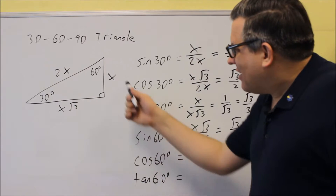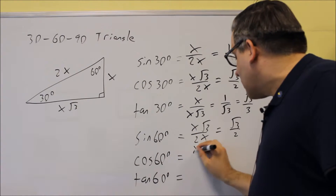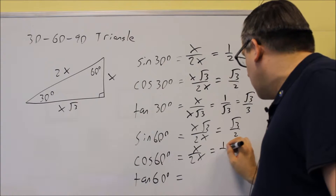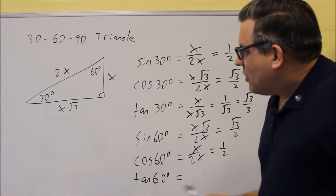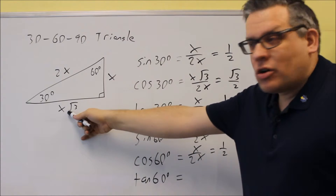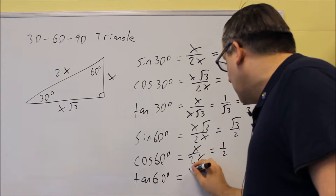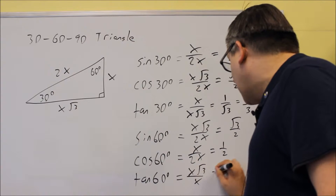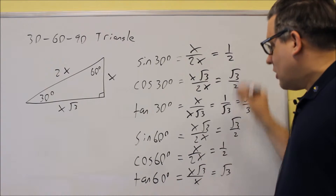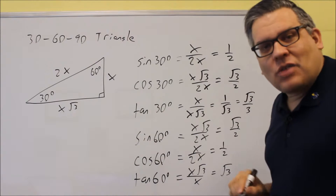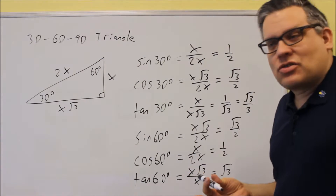For cosine 60, adjacent over hypotenuse is x over 2x, and you get 1 half. For tangent 60, the opposite is x√3 divided by the adjacent x, so you get x√3 over x, which gives you √3. You can see we still generate exactly the same values as the unit circle, just using a triangle that's not actually on the unit circle.